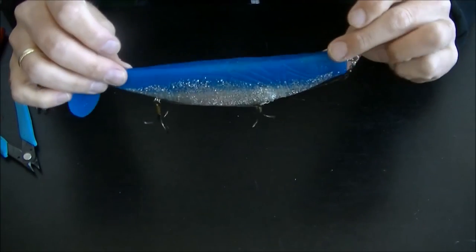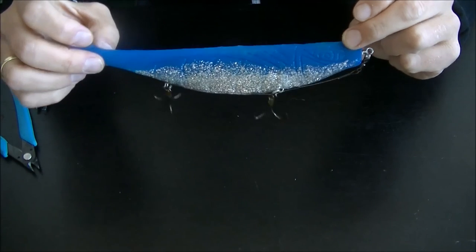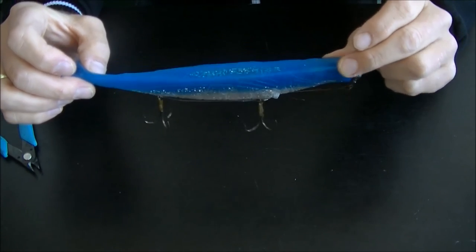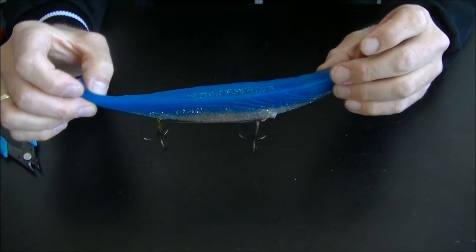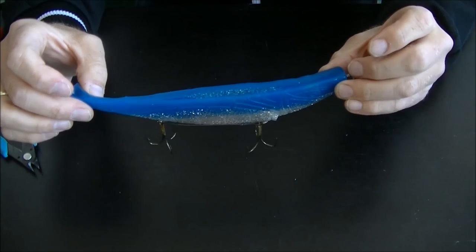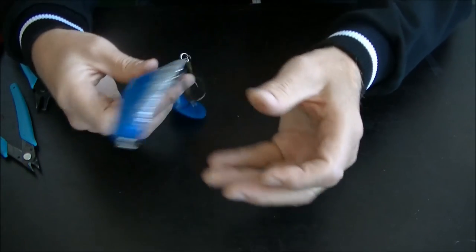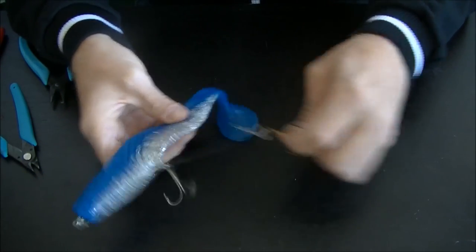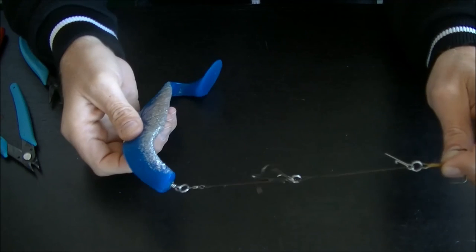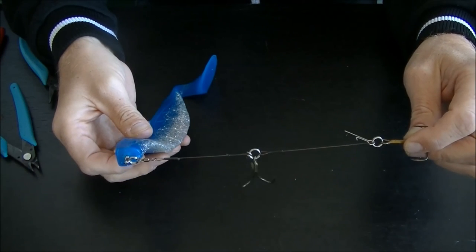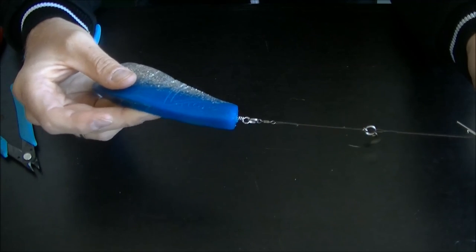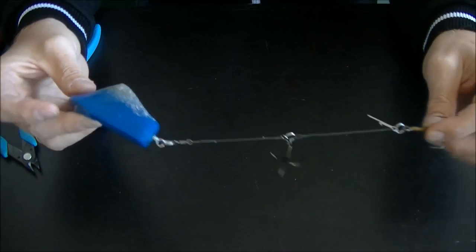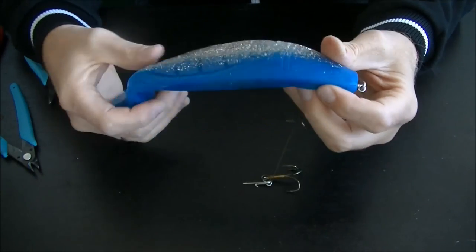We have now a shad that can be fished very shallow, and it's got a lot of advantages. You can cast it, you can troll it over the weeds, and when a fish bites, it just pops out the rig and it keeps the pike away from your shad, so there's not much damage to it.